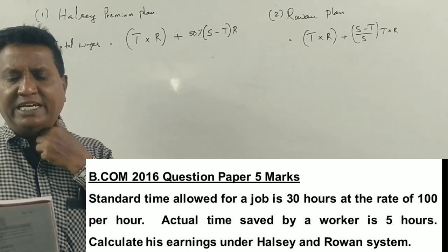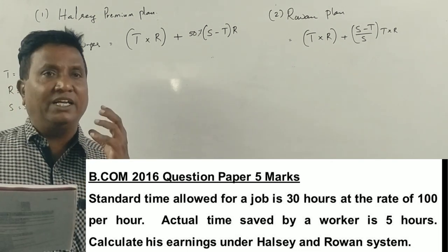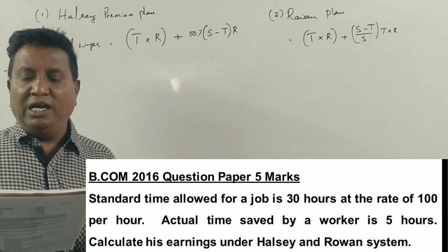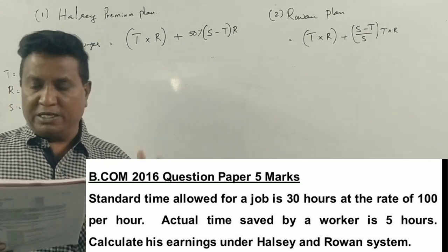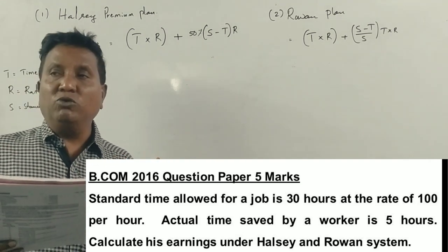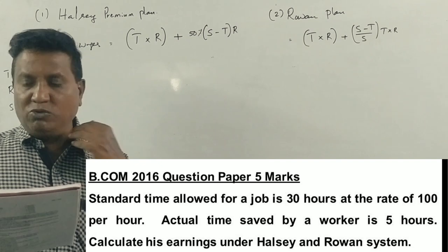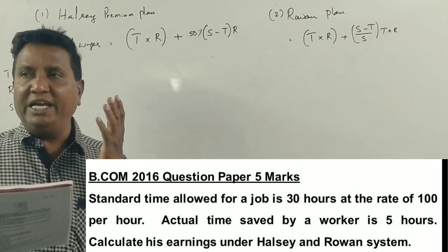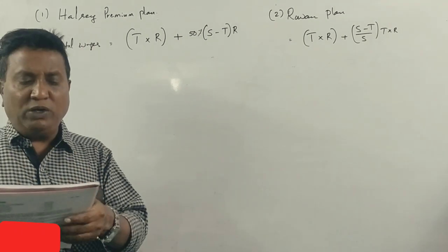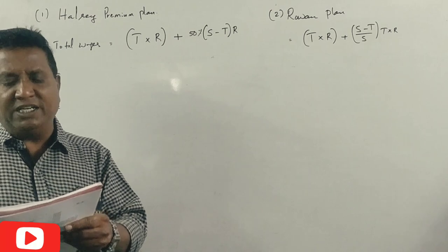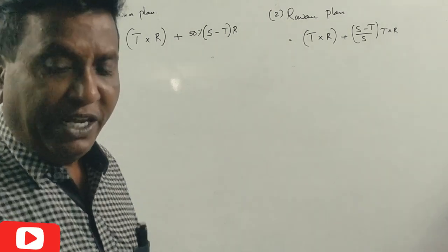The standard time allowed for a job is 30 hours at the rate of 100 rupees per hour. Actual time saved by a worker is 5 hours. Now we have to calculate the earnings.